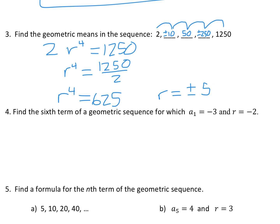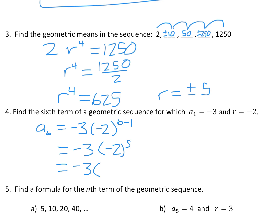The next problem is asking us to find a6, the sixth term. The formula is a1, which was given, times r to the power n minus 1. We know n is 6, so it's negative 3 times negative 2 to the 5th. Negative 2 to the 5th is negative 32. Negative 3 times negative 32 gives us 96.